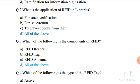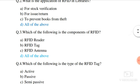Question number 3. Which of the following is a component of RFID? The options are: RFID reader, RFID tag, and RFID antenna. So option D is correct — all of the above options are correct.